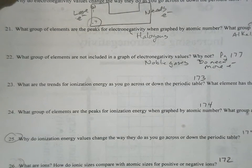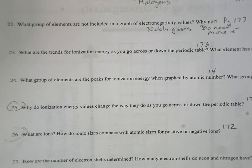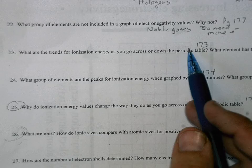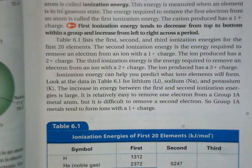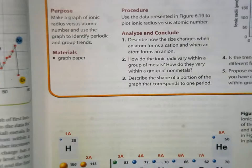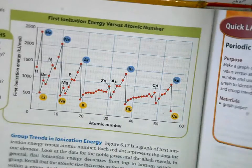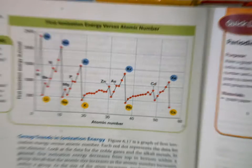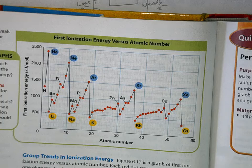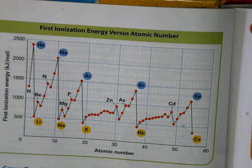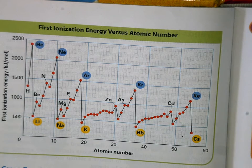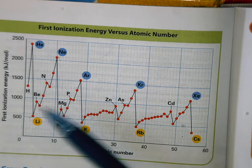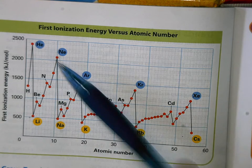Number 23: what are the trends for ionization energy as you go across or down the table? Go to page 173 — it has a really nice graph showing ionization energy. An ion is an atom that has had an electron pulled off or has gained an electron. Ionization energy is how much energy it takes to pull an electron off. On the graph, we start off really low on the left side.